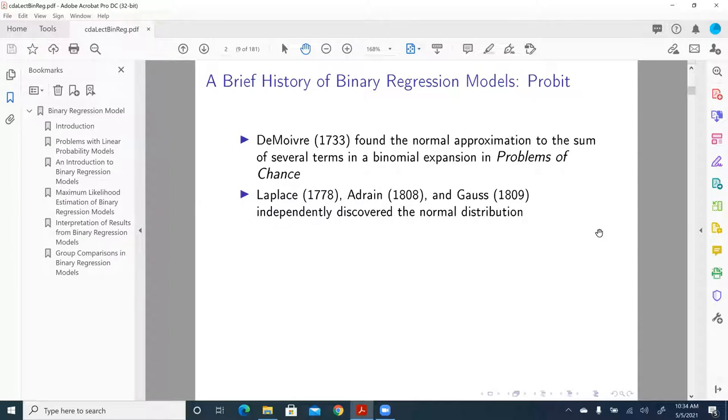Laplace in 1778, Adrian in 1808, and Gauss in 1809 independently discovered normal distribution.